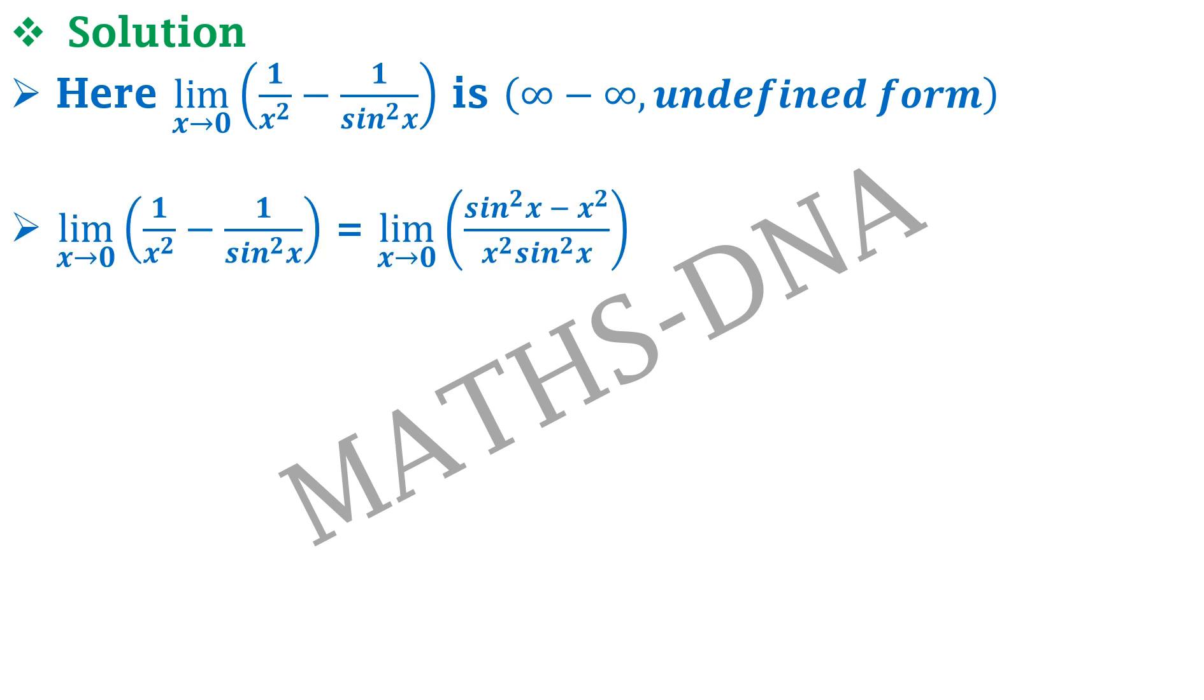So we need to solve this. We take the LCM and we get limit x tends to 0, sin square x minus x square divided by x square into sin square x. Now we all know that sin x is 1 minus x cube upon 3 factorial plus x raise to 5 upon 5 factorial and so on, whole square because it is sin square x. You should know the series of sin x minus x square divided by x square into sin square x.